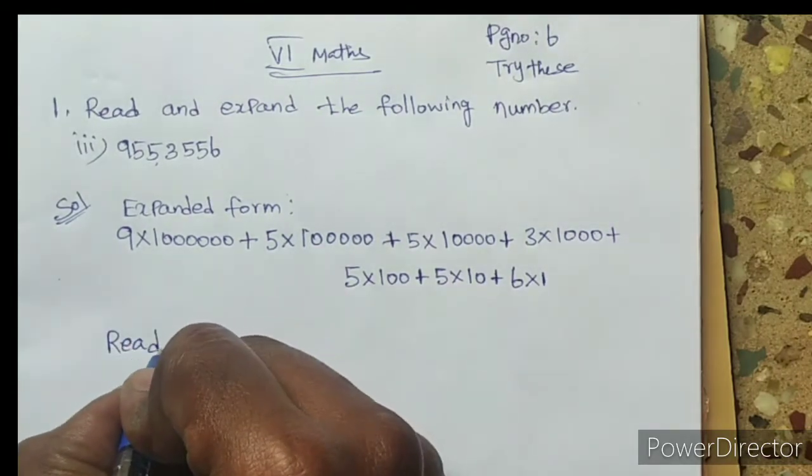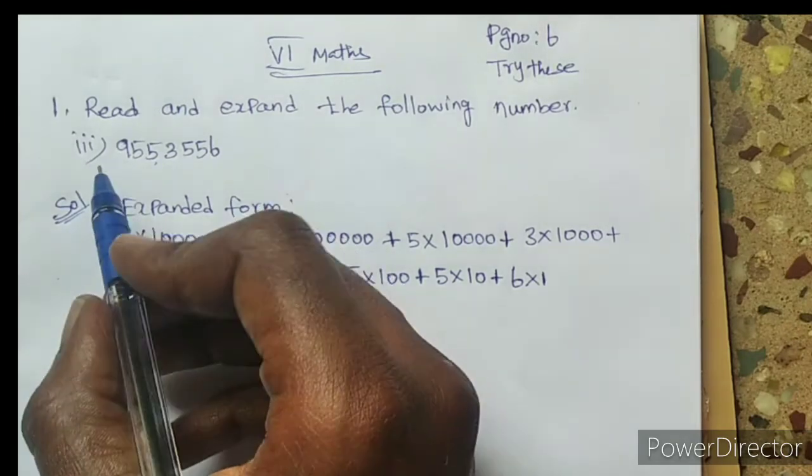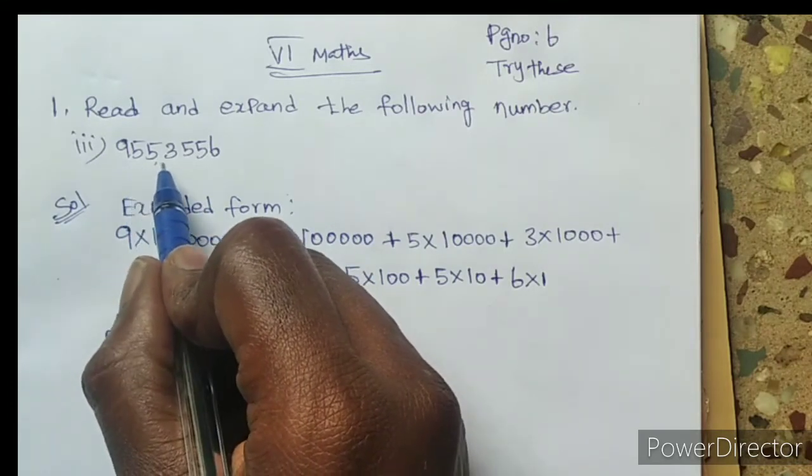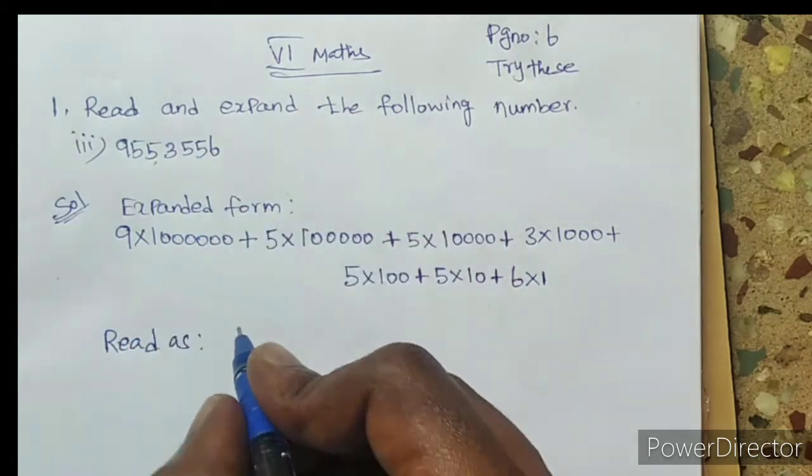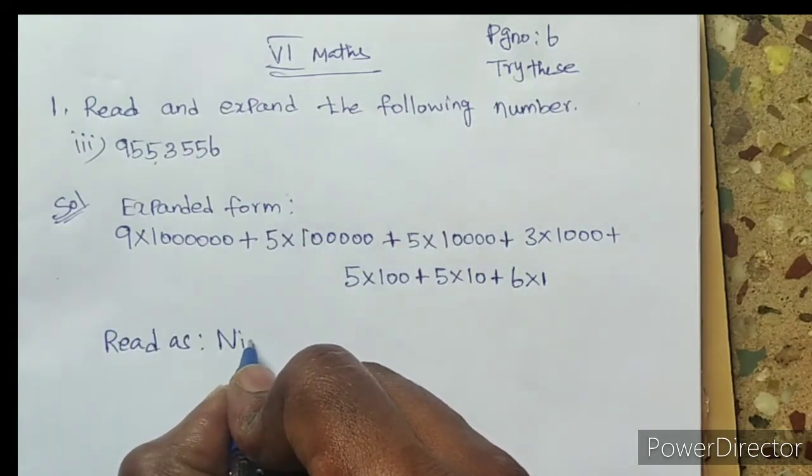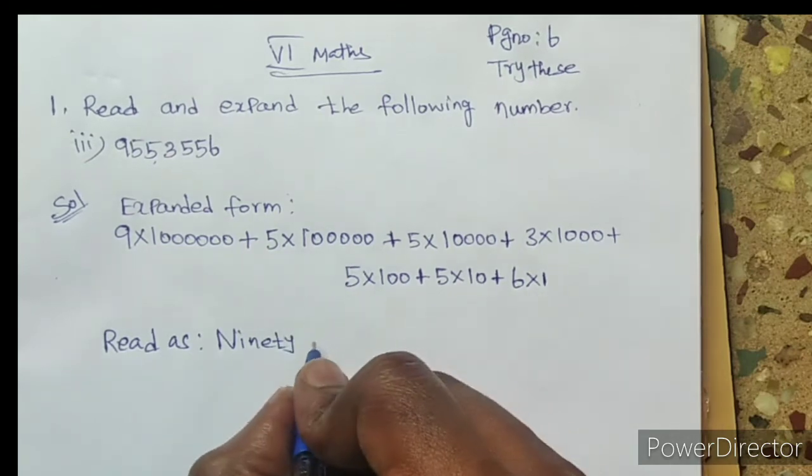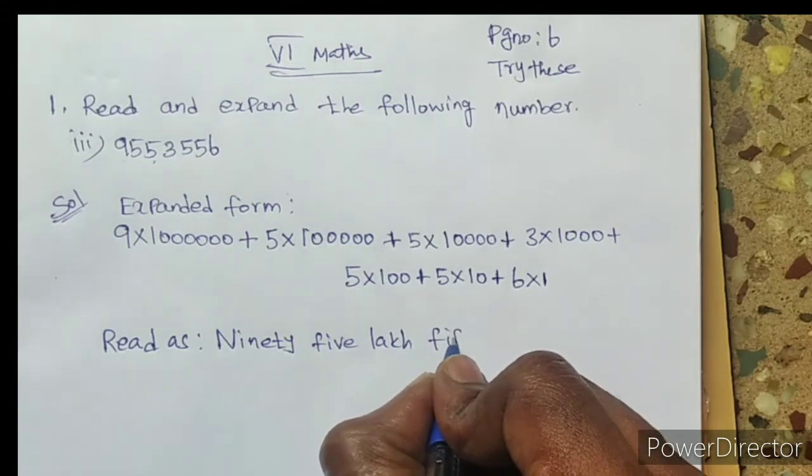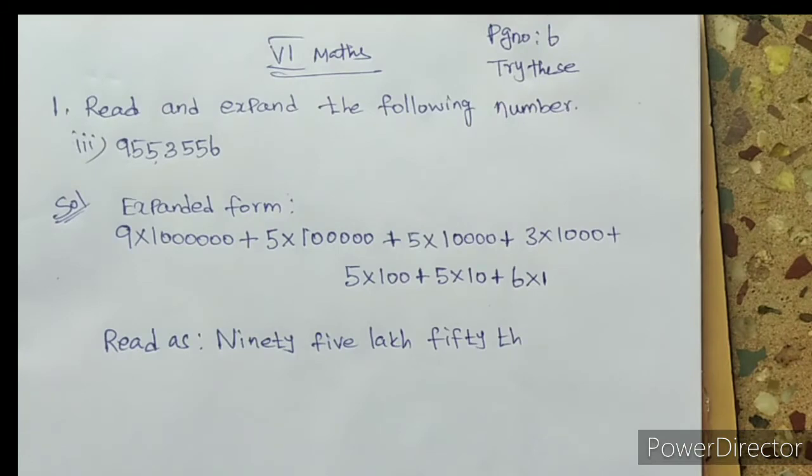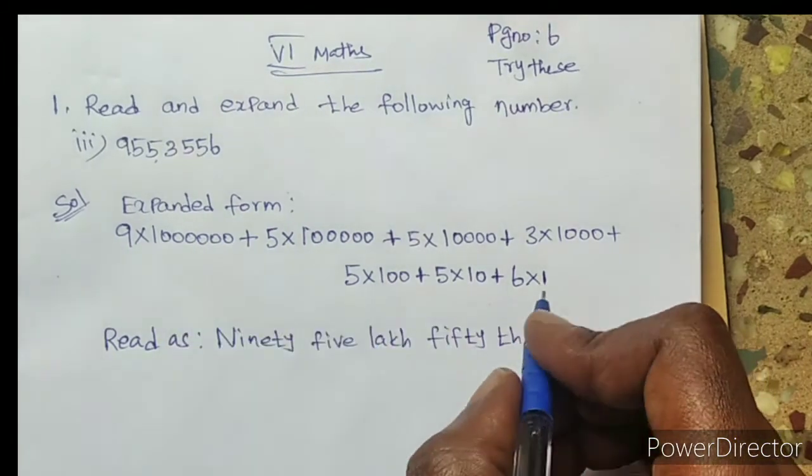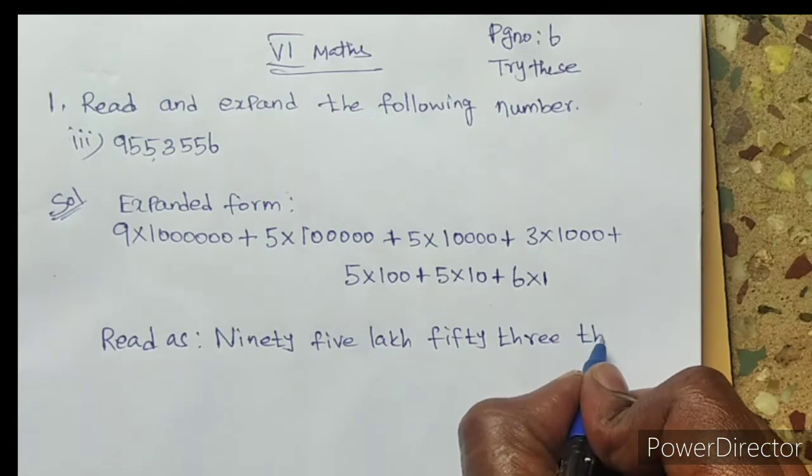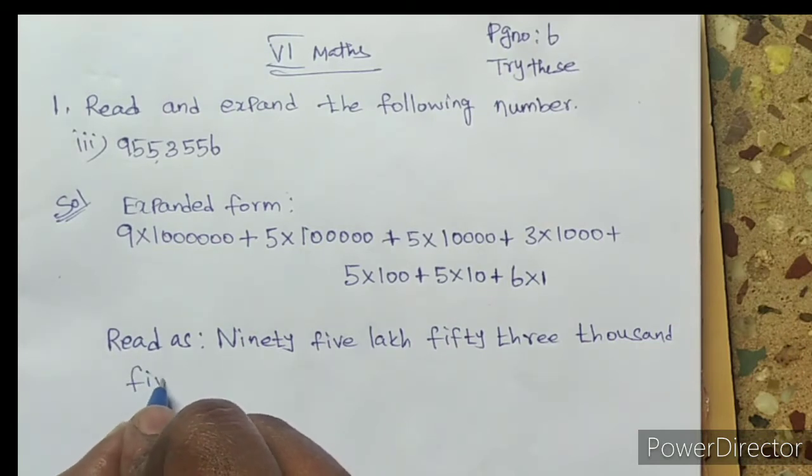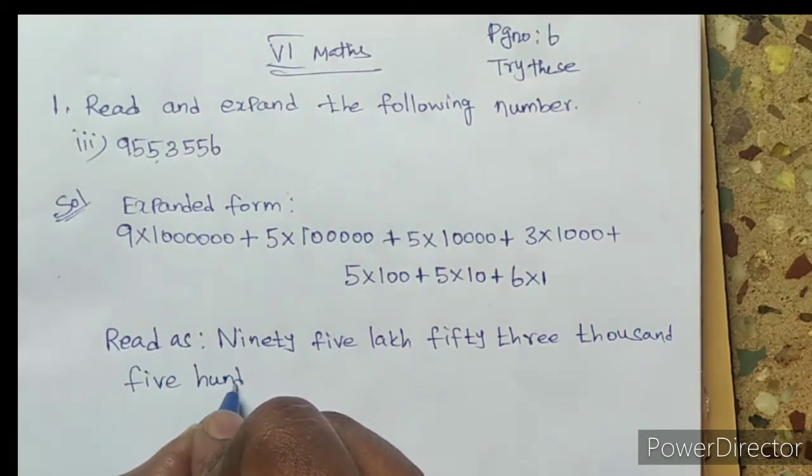Next write this in reading form. Read as: if we read it, it is 95 lakhs 53,556. So write like this: ninety-five lakh fifty-three thousand five hundred and fifty-six.